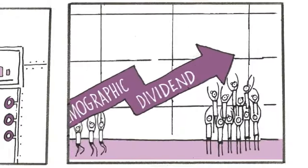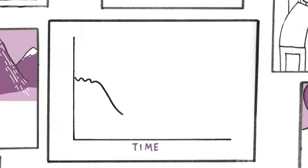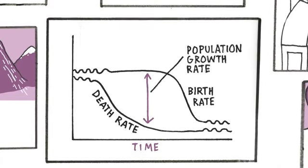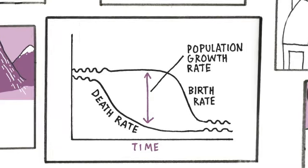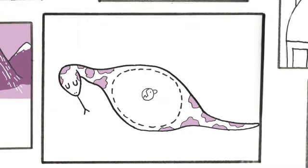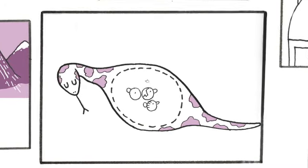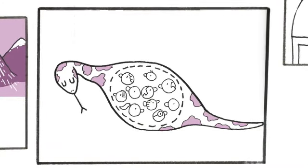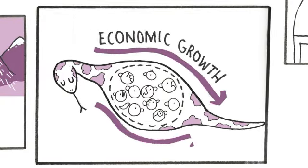The demographic dividend describes an increase in the rate of economic growth due to a rising share of working-age people in a population. The effect is like a pig and a python, where the bulge in the python's body represents the population in a particular age group. When the bulge reaches the working age, it marks the highest period of economic growth for the country.